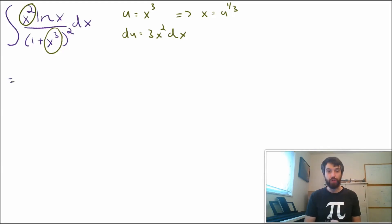So let's transfer into u's. First of all, I have an x squared dx on the top. That's going to be now 1 third, so I'll put the 1 third out the front, and 1 third du. Then I have an ln of x, but now the ln of x transforms to an ln of u to the power of 1 third, all divided by 1 plus u squared.